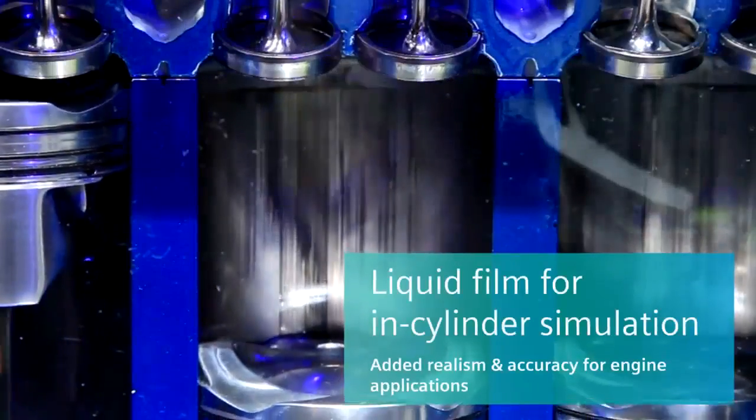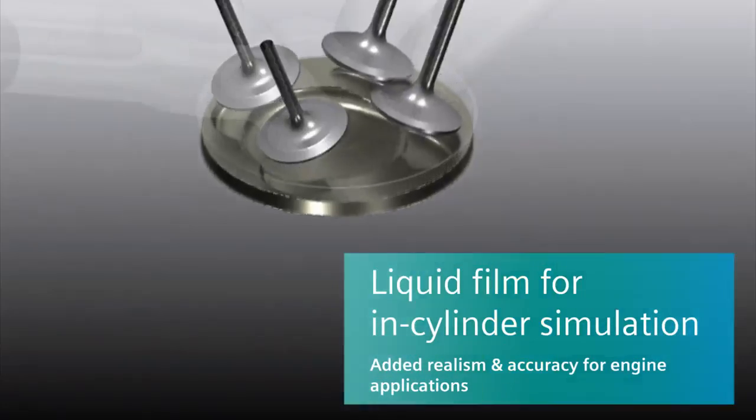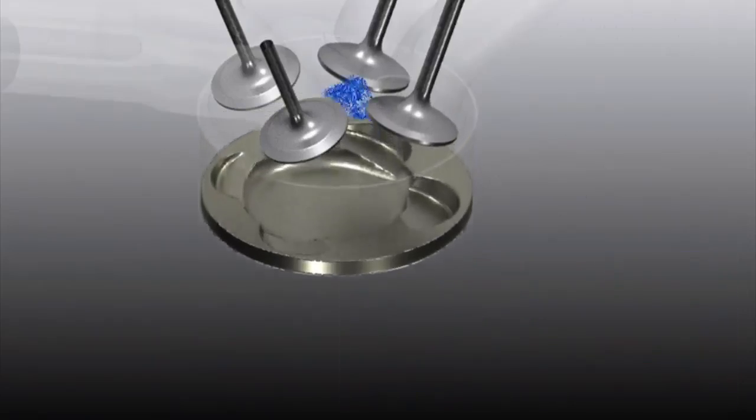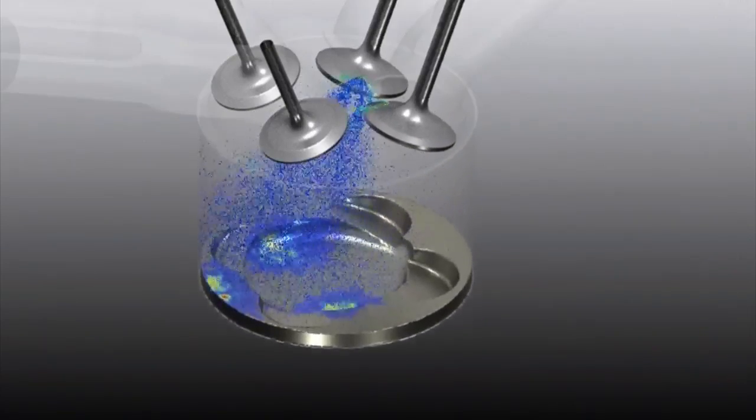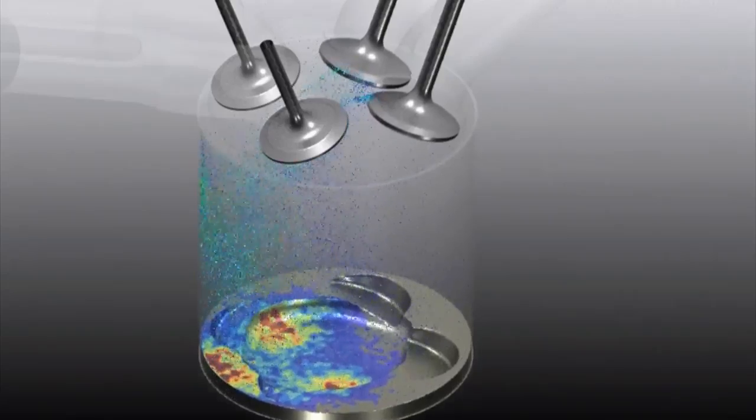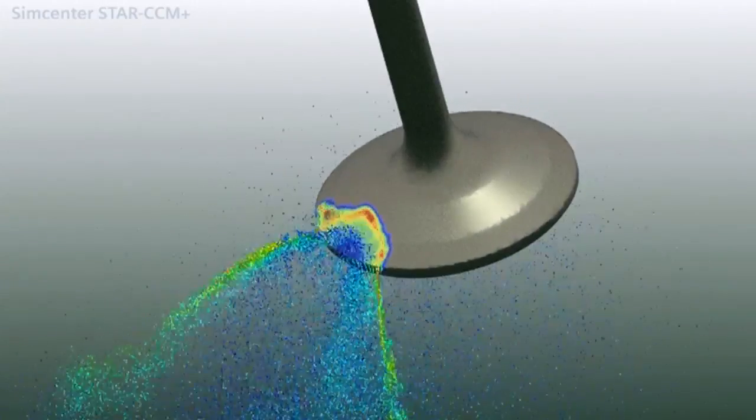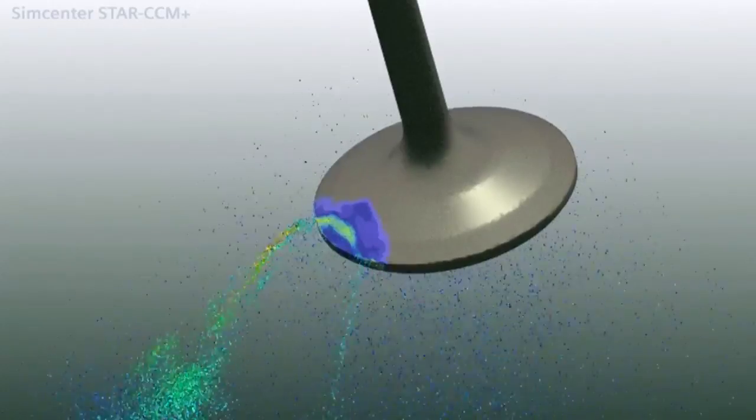High fuel loading in internal combustion engines may cause undesired liquid films to form on surfaces. You can now model this phenomenon with SimCenter STAR-CCM Plus in-cylinder solution. This means better understanding of the performance impacts of high fuel loading, including emissions and pool fires, and in the end leads to better combustion system design.